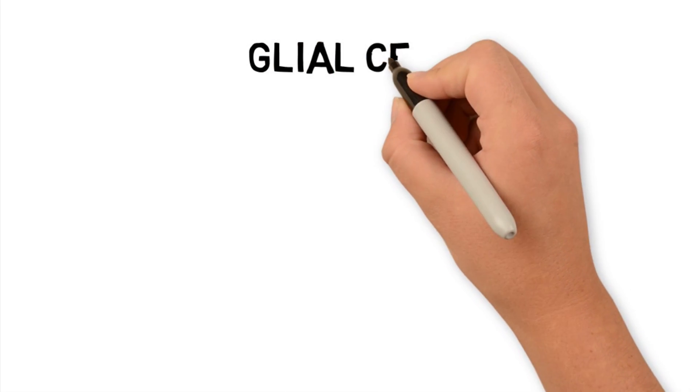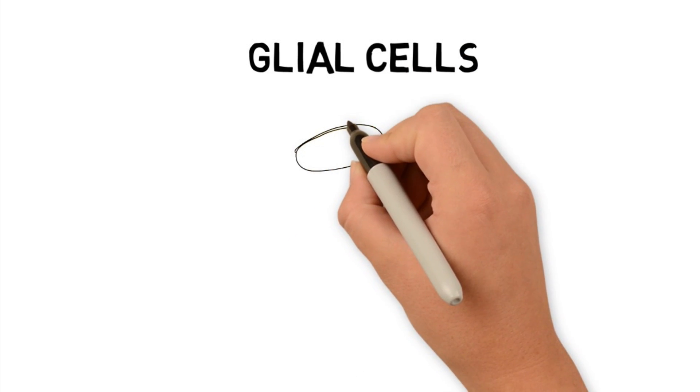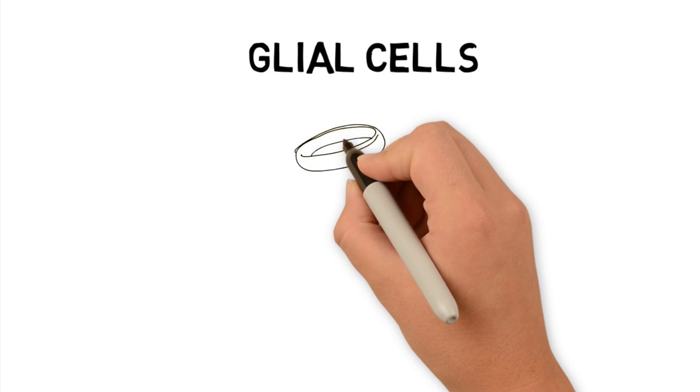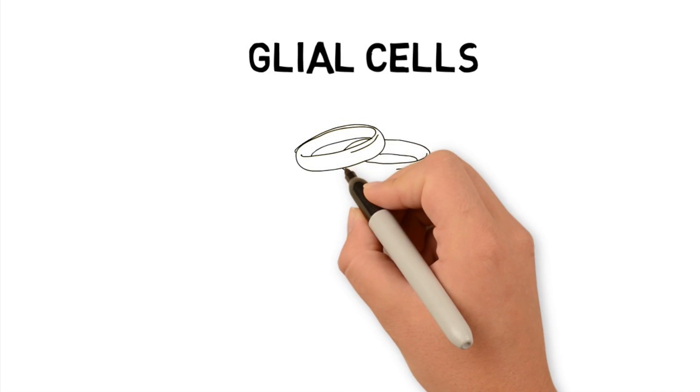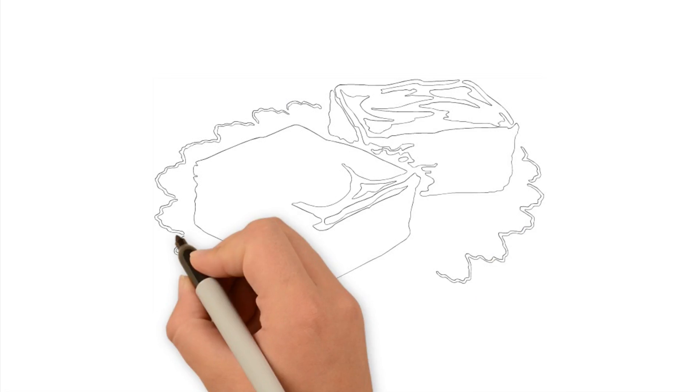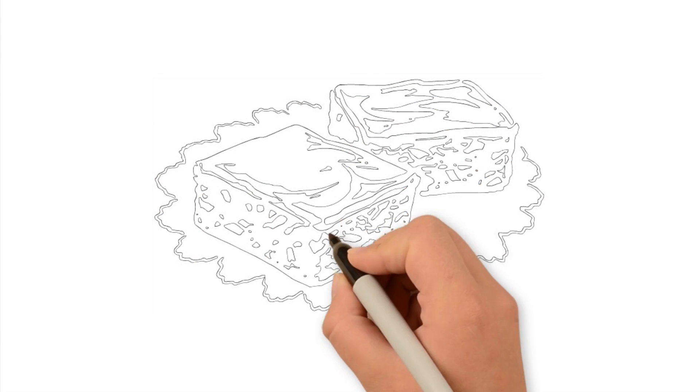We also have these cells called glial cells. Glial cells surround neurons and provide support and insulation. I like to say that my wife is my glial cell because she supports and takes care of me. That should get me some serious brownie points.